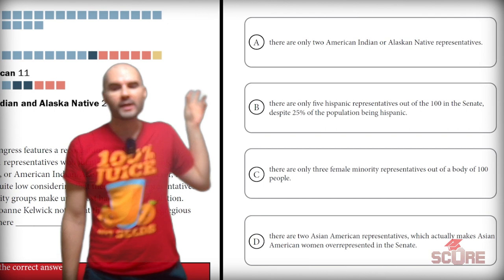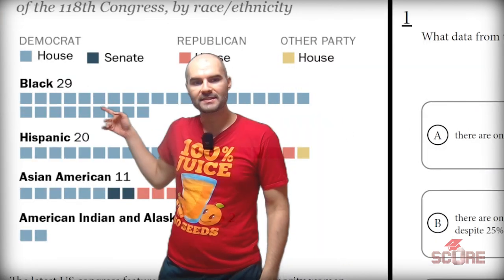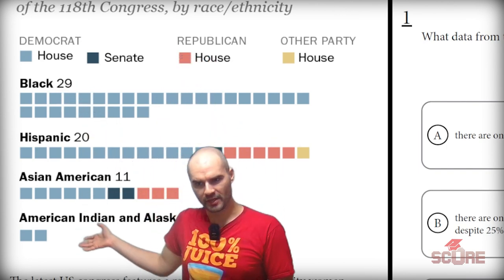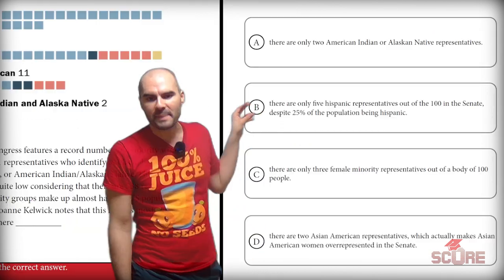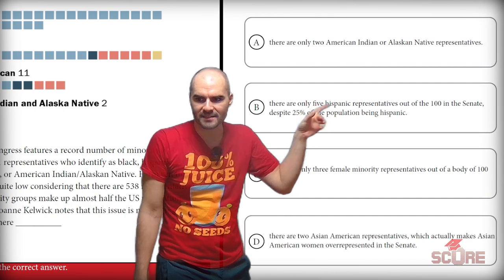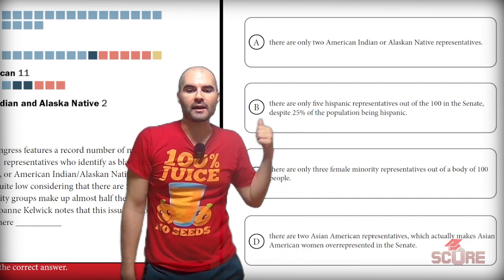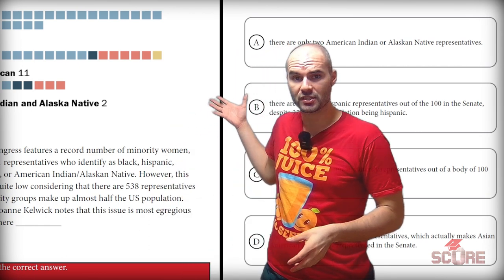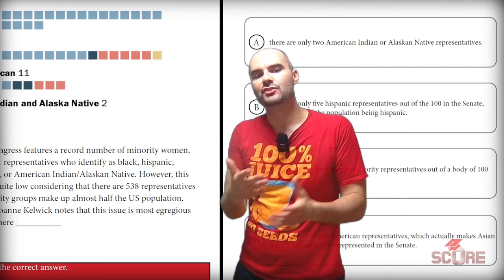Answer A says there are only two American Indian or Alaska Native representatives, but they're not in the Senate — the chart shows one color for the House and one for the Senate, and those are not the Senate color, so A is wrong. B says there are only five Hispanic representatives — again that's not true in the Senate. C says there are only three female minority representatives out of a body of a hundred people. That is the right answer because we have proof of just three female representatives in the Senate.